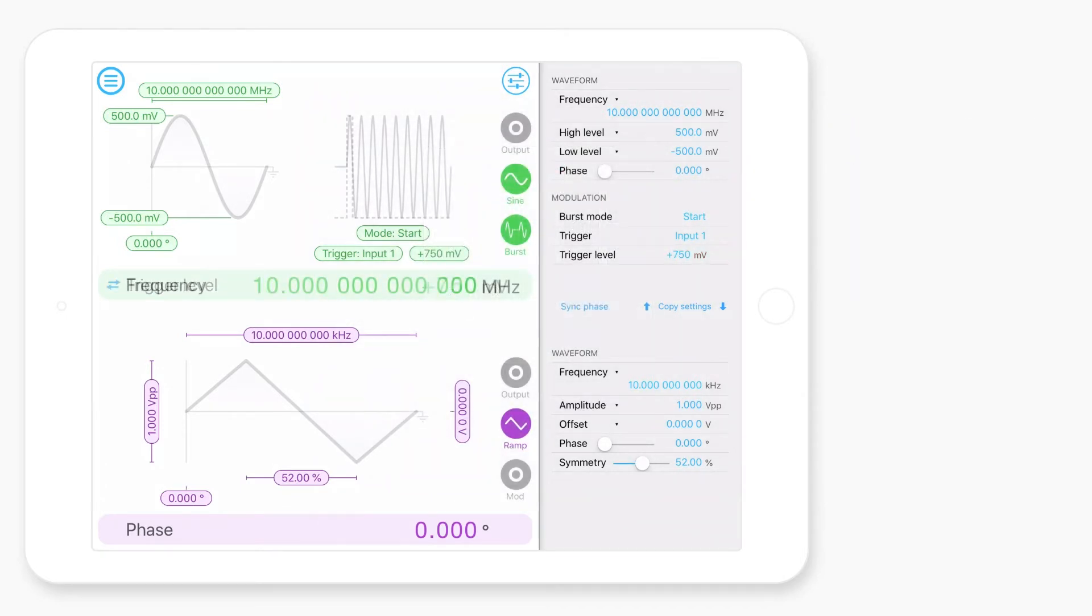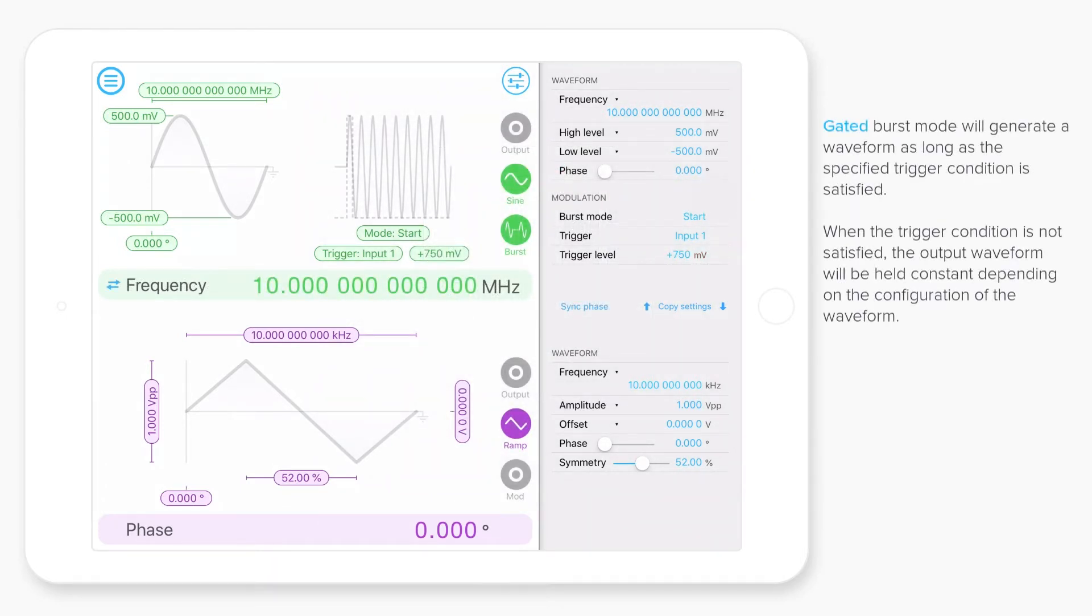The final burst mode is gated mode. And this allows you to generate the output voltage as long as the trigger condition is satisfied. So with a trigger level of 750 millivolts, if the signal coming in on input one exceeds that, it will produce this sine wave at 10 megahertz. But as soon as that trigger condition is not satisfied, it will stop generating that waveform.